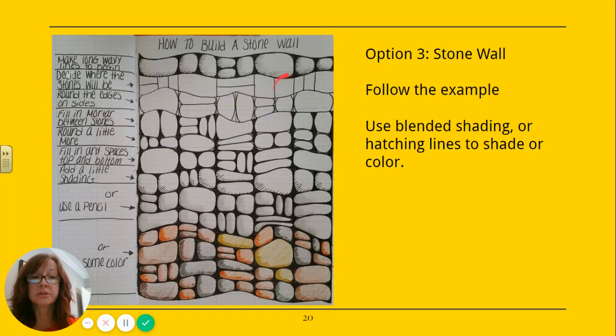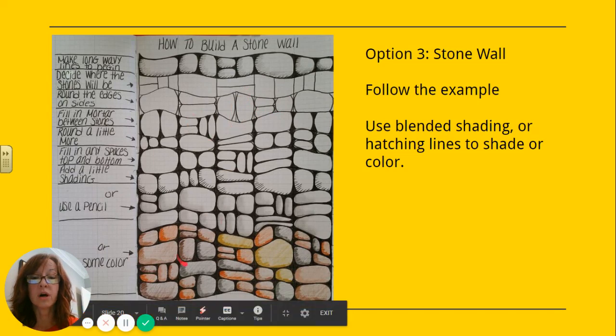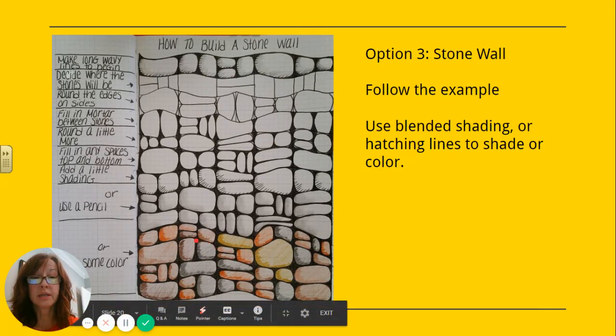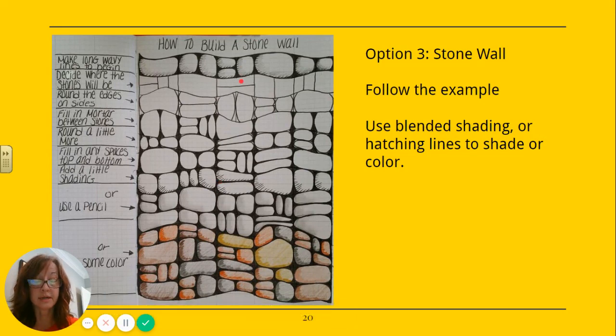Your next option, option three, is to do a stone wall. Now you do not have to create the stones or the boulders exactly this way. This is just a way to get you started. You're going to divide it up kind of uneven and then divide the shapes up randomly. So if it's a stone wall, you're kind of fitting in pieces versus a brick wall where they're all the same. Rounding edges, kind of creating that mortar. Again, you can use colored pencils for this if you want. This one has hatching lines instead of shading, if you like. And this has blended kind of together. So you can decide on that.